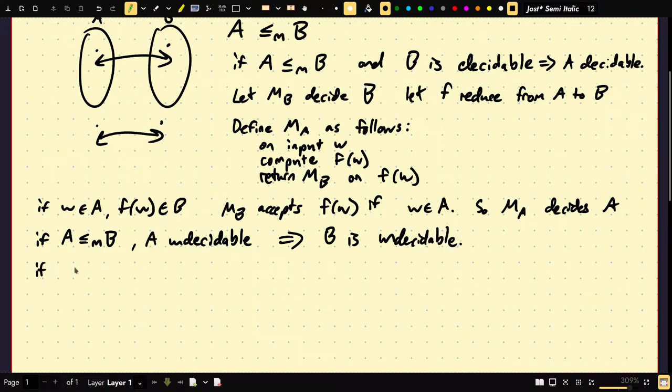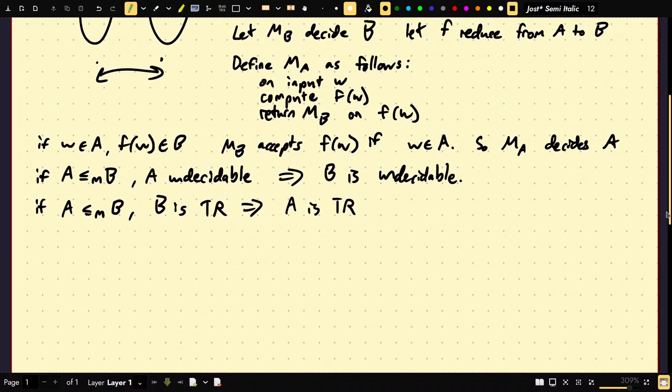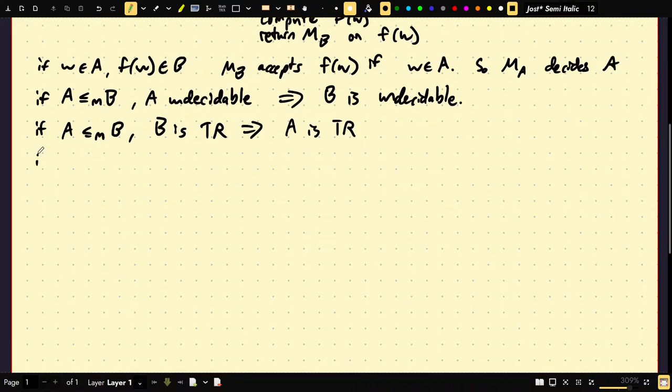So, if A is reducible to B, B is Turing recognizable, that implies that A must have been Turing recognizable. You can think the proof is similar here. Instead of a decider, we construct a recognizer.